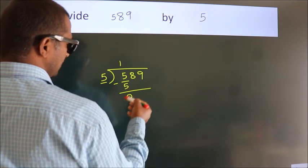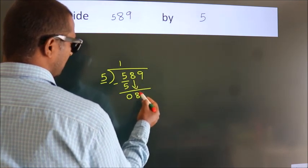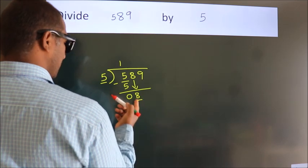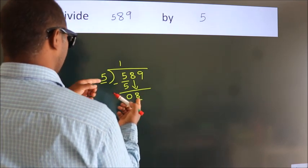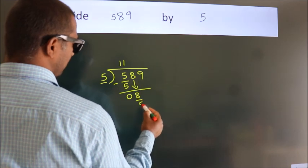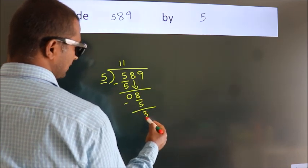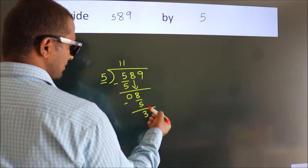After this, bring down the beside number. So, 8 down. A number close to 8 in 5 table is 5 once, 5. Now, we subtract. We get 3.